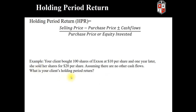Please pause the video and work the problem. To solve the problem you should have taken 100 shares and multiplied it by the ending selling amount of the shares, then subtract the 100 shares originally purchased at $10 per share. Your denominator is also the amount you originally purchased. The result of this should be a 100% gain.